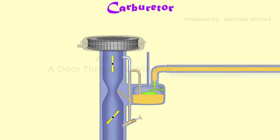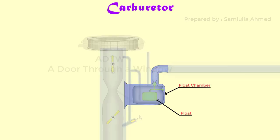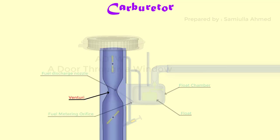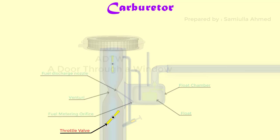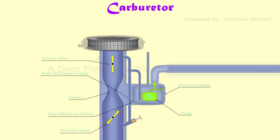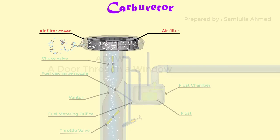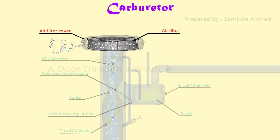A simple carburetor mainly consists of float chamber, fuel discharge nozzle and a metering orifice, venturi, throttling valve and choke valve. Before venturi there is an air filter which filters out all the incoming impurities with air into the carburetor.